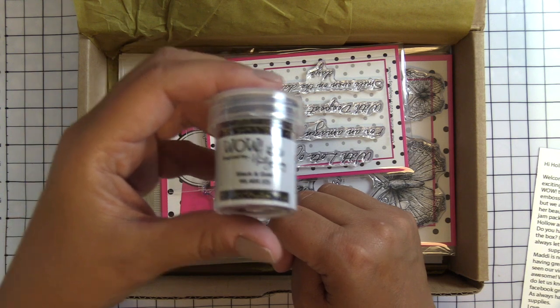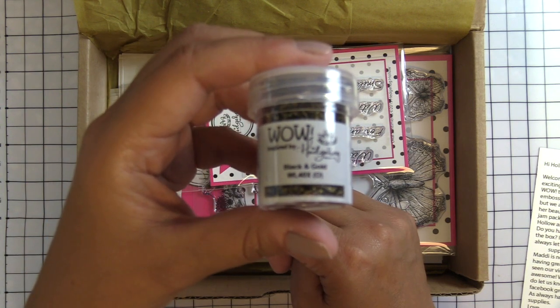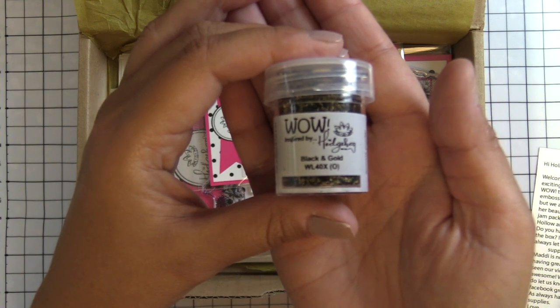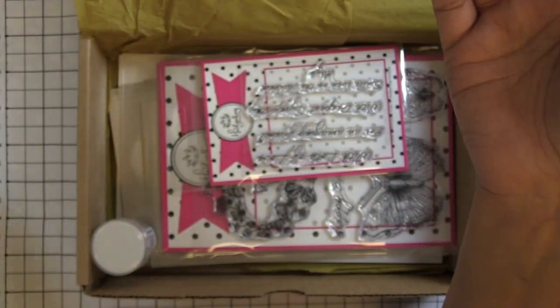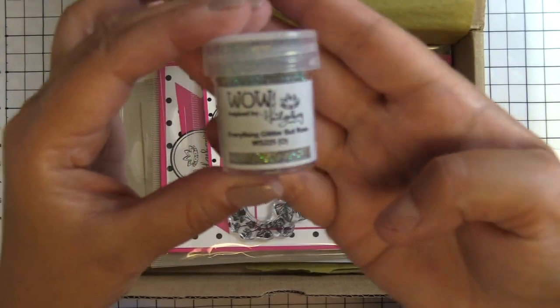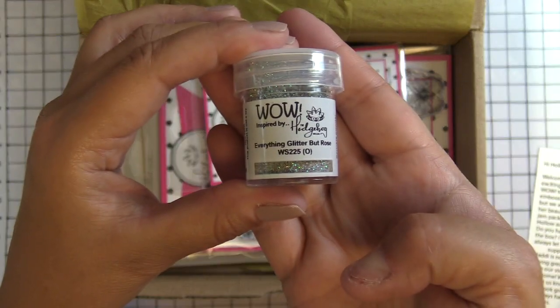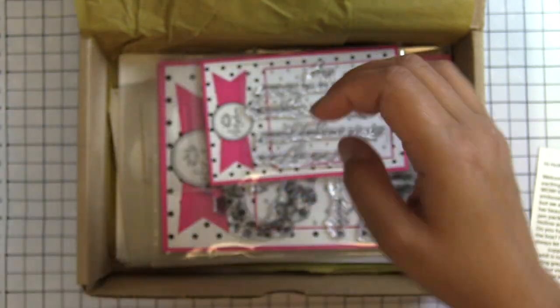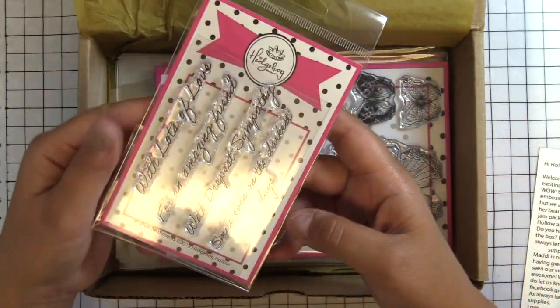This is a black and gold. This is a chunkier embossing powder so I'm excited to use this one to see how it turns out. I'm planning on using it on things that maybe have less fine detail, more kind of chunky lines. And this is everything glitter but rose. So you can see all of the glitter in there and then it has some rose gold embossing powder as well.